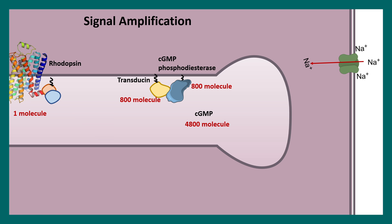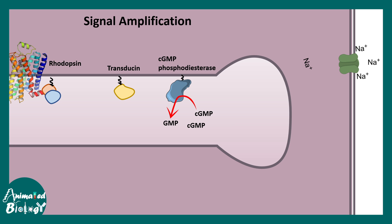There is also signal amplification in the cyclic GMP pathway. Hundreds of cyclic GMP phosphodiesterase molecules can convert many cyclic GMP molecules into GMP — the number of cyclic GMP molecules converted is a multiple of the number of phosphodiesterase enzymes. This inhibits sodium ion entry and hyperpolarizes the neurons, preventing them from firing.